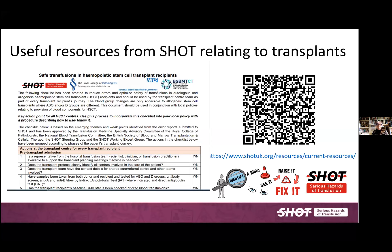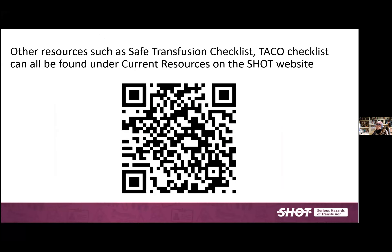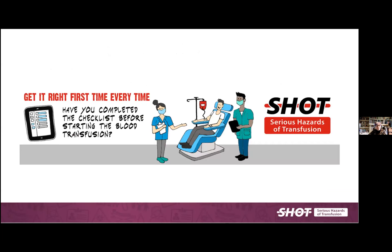SHOT has several useful resources relating to transplants, including a detailed document accessible via QR code. There is also an educational video about transfusion errors in transplant recipients. Safe transfusion checklists, TACO guidance, and current resources are available on the SHOT website. There is also a very helpful app for transfusion decision-making in general — a quick lookup of what the essential action is, which is particularly useful for medical and nursing staff.